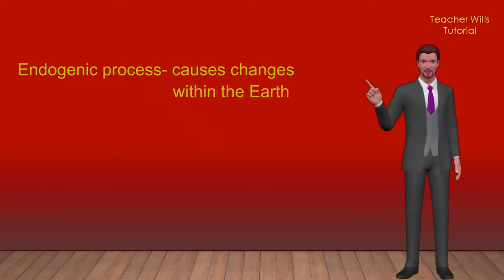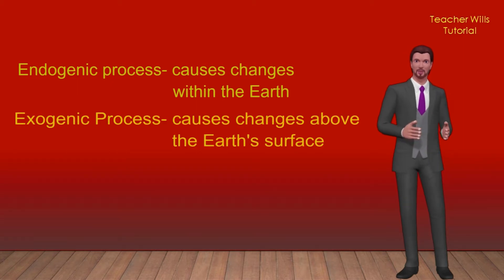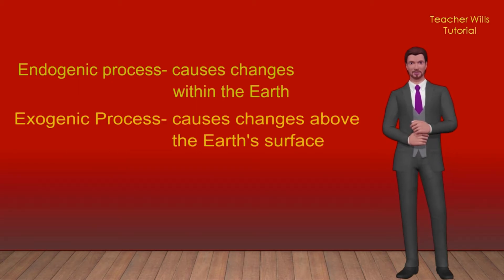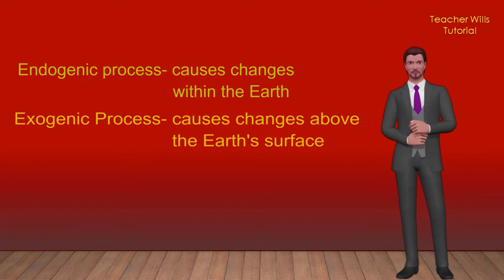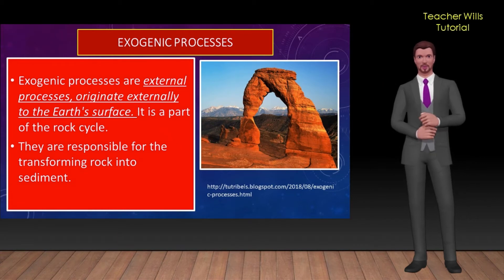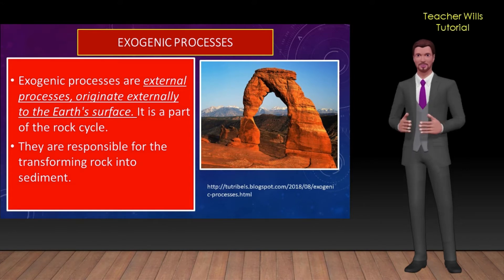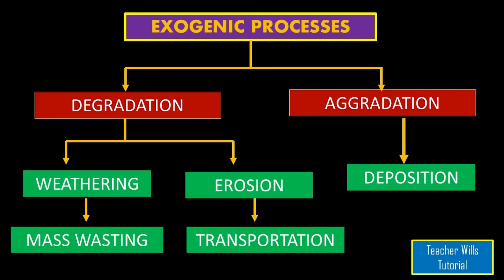Our Earth is a dynamic body. It is constantly changing, as manifested by the change in the surface of Earth. It is continuously affected by forces that cause changes within Earth, called endogenous or endogenic processes, and above the surface, called exogenic processes. Exogenic processes include degradation processes — weathering, mass wasting, erosion and transportation — and the aggradation process, which includes deposition.